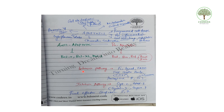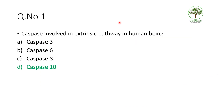For the extrinsic pathway, the key factors are FAS ligand and FAS associated death domain. The marker to remember is CD95. It activates pro-caspase 8, and in humans, caspase 10. For the intrinsic pathway, the key factors are cytochrome C and APAF1 — apoptotic protease activating factor — activating caspase 9. The final effector caspases are 3 and 7. So the answer is caspase 10 in human beings.